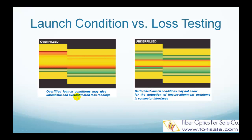probably 0.6 to 0.7 dB. But if this fiber link uses a Vixel laser, this loss rating is misleading and overestimated, since Vixel lasers will underfill the core and there will be no higher order mode loss.